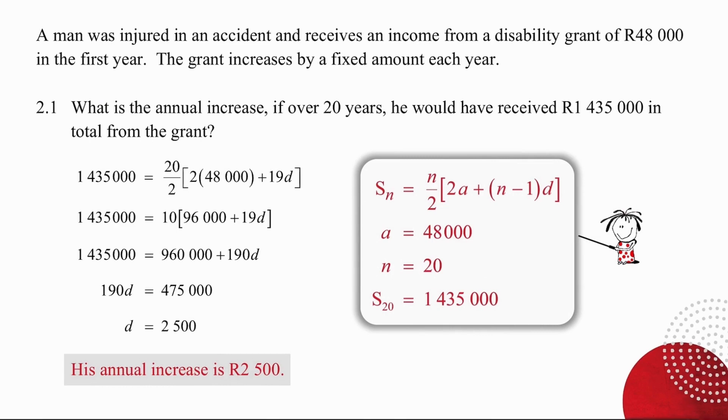The most important information is the fact that we are working with a fixed increase. So we are going to use the formula for a sum calculation for an arithmetic series. We know that the a value is 48,000. We know that the n value is 20 and we know the SN result is 1,435,000 rand. Simply substituting those values into our formula produces the outcome of d equal to 2,500. So his annual increase per year is 2,500 rand. Pause the video and process this in your own time if you need another look.